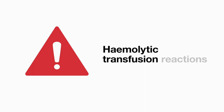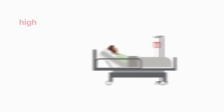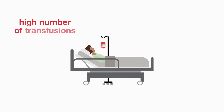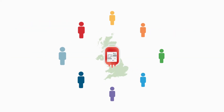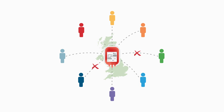People with haemoglobinopathies are at an increased risk of haemolytic transfusion reactions due to the high volume of transfusions received and increased rates of alloimmunisation. Mismatches in ethnicity between the UK blood donor population and the majority of people with haemoglobinopathies also contributes to higher rates of alloimmunisation.